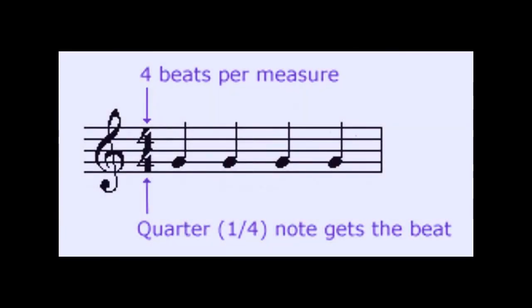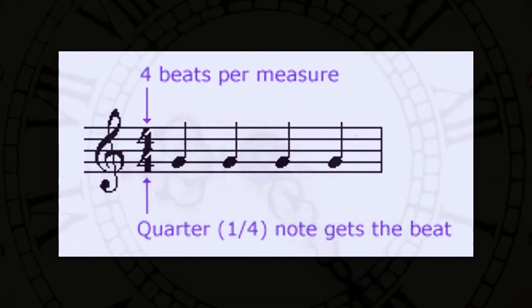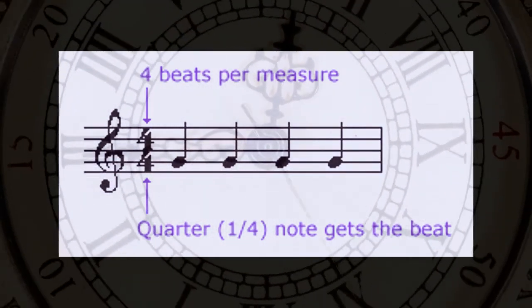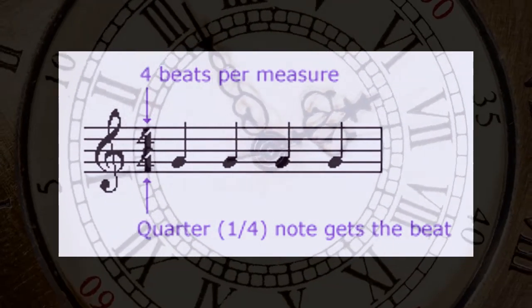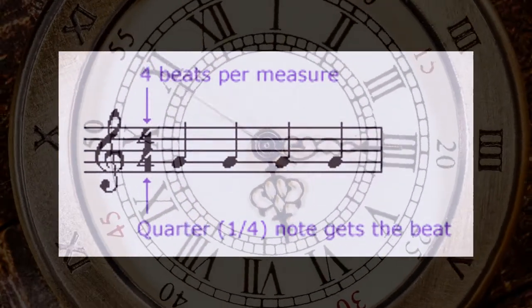The time signature appears at the beginning of the music after the clef sign. It has two numbers. The top number tells you how many beats are in each measure. And the lower number tells you which type of note receives one beat. If there is a four at the bottom, the quarter note receives one beat.